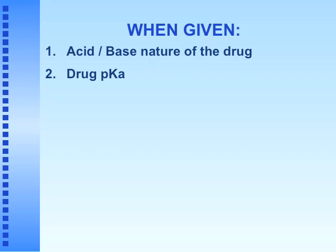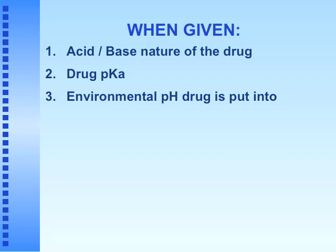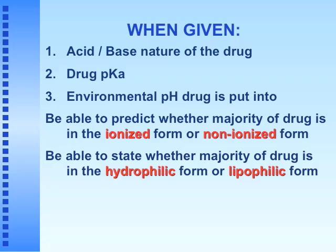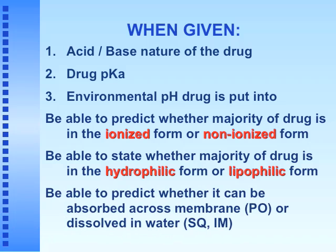When given the acid-base nature of the drug, the drug pKa, and the environmental pH where the drug will be placed, you should be able to predict whether the majority of the drug is in ionized or non-ionized form, and whether it's hydrophilic or lipophilic. You also need to predict whether it can absorb across a membrane. PO (per orum, by mouth) is the oral method. SQ (subcutaneous) and IM (intramuscular) are water-based environments, so the drug must be hydrophilic to dissolve there. If given by mouth, the drug must cross a lipid membrane.